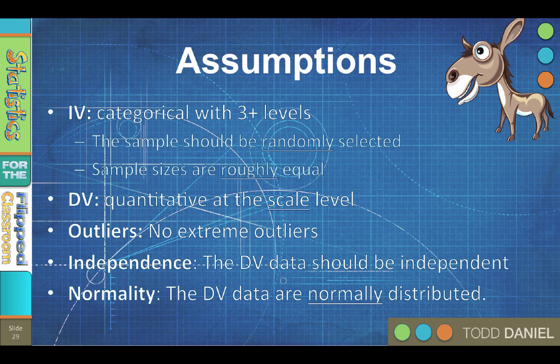And normality. The scores on the dependent variable within each group should be approximately normally distributed. The Shapiro-Wilk test and/or a QQ plot or a PP plot or a box plot are all used to test for normality. See my video about the central limit theorem for a fuller discussion about the implications of normality.